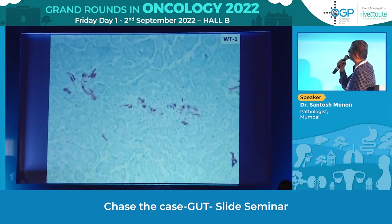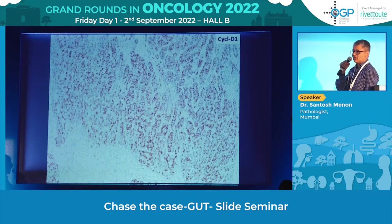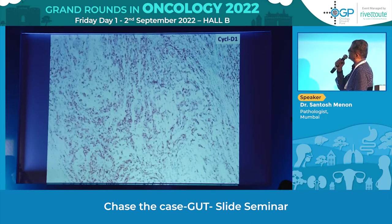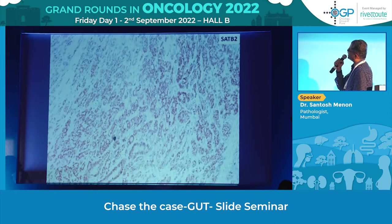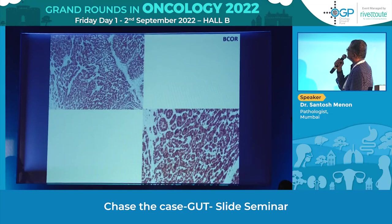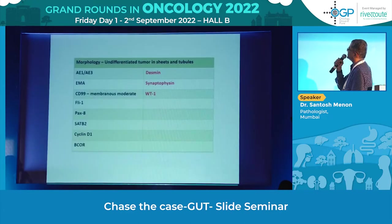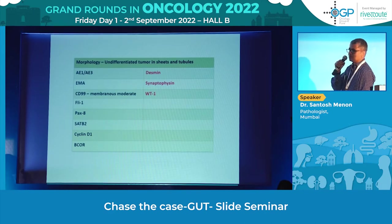WT1 was negative. Cyclin D1 was positive — we had a thought process: is it a clear cell sarcoma or a BCOR-type tumour? Cyclin D1 was diffusely positive. SATB2 was positive. BCOR was diffusely and strongly positive. So: is it a BCOR sarcoma, is it a carcinoma, is it some other undifferentiated tumour? The full positive panel was AE1/AE3, EMA, CD99, FLI1, PAX8, SATB2, Cyclin D1, and BCOR. Negative: Desmin, Synaptophysin, and WT1.